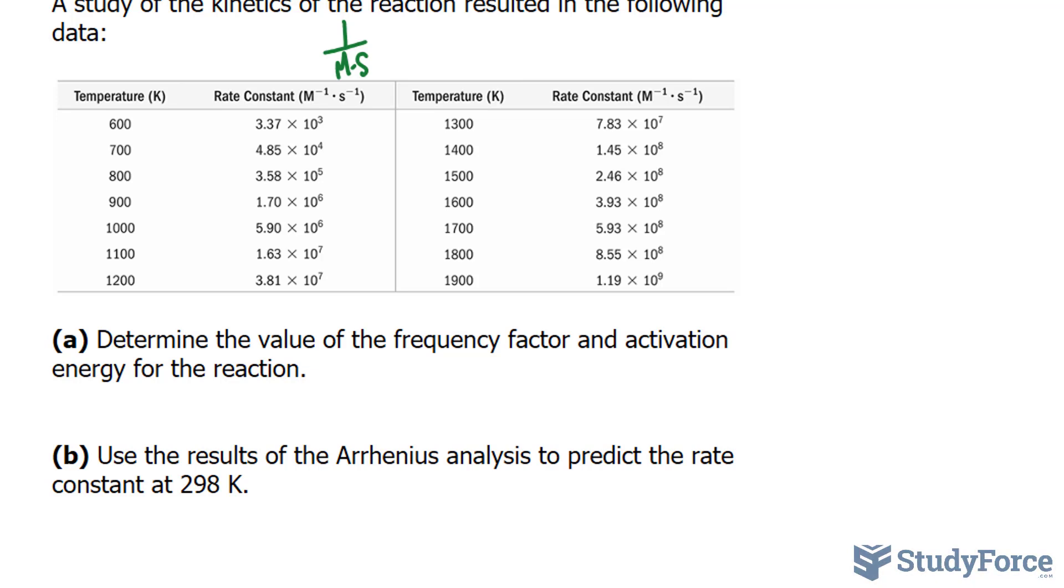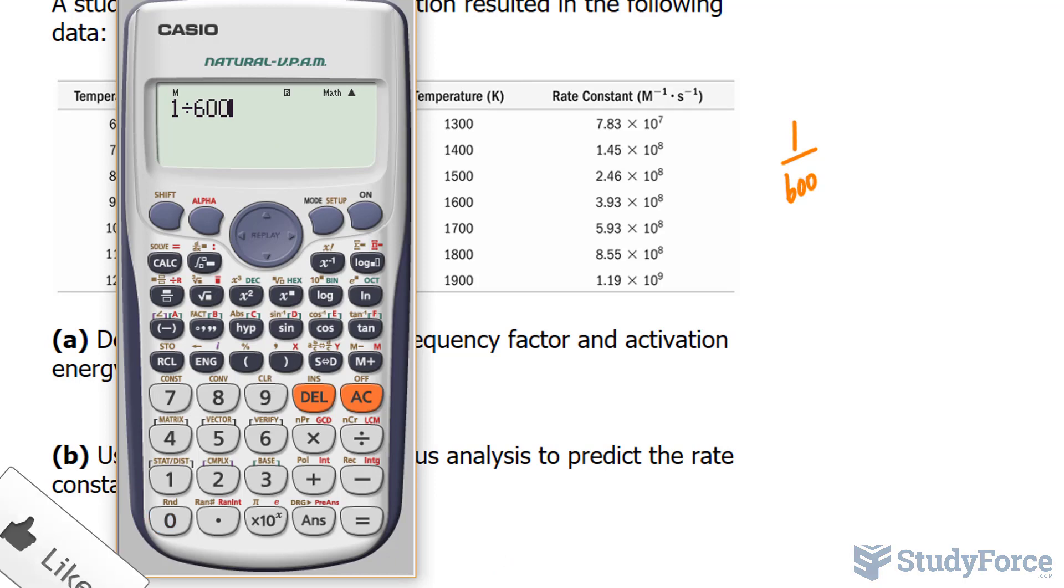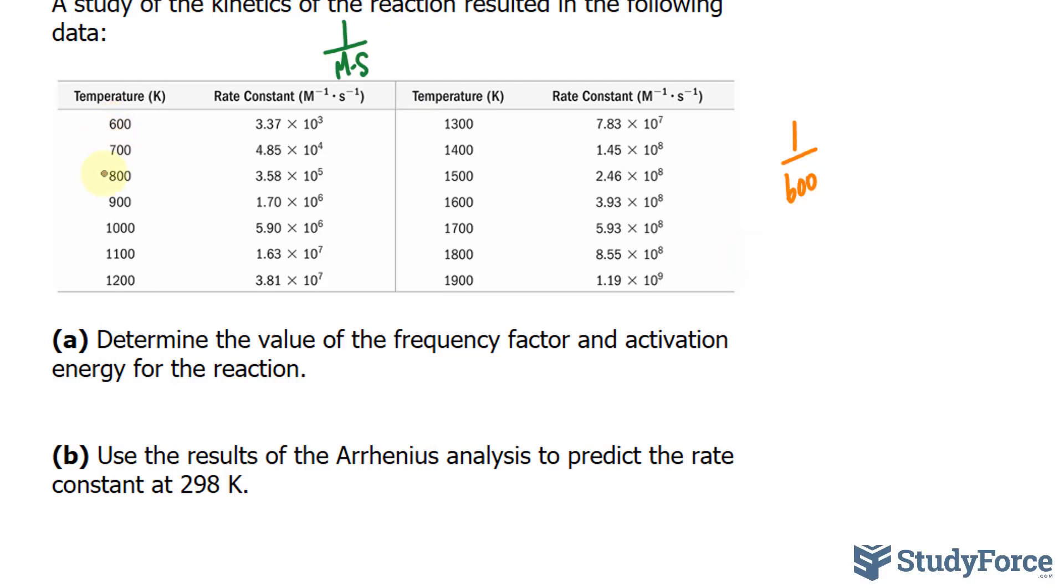To do this problem effectively, we have to prepare a graph of the natural log of the rate constant versus the inverse of the temperature. In other words, we'll take the inverse of each of these numbers. Take, for example, 600. It will become 1 over 600. And you record that number rather than 600. And 1 over 600, just to give you an idea, is 0.0016 repeating. So you do this for each of these numbers.